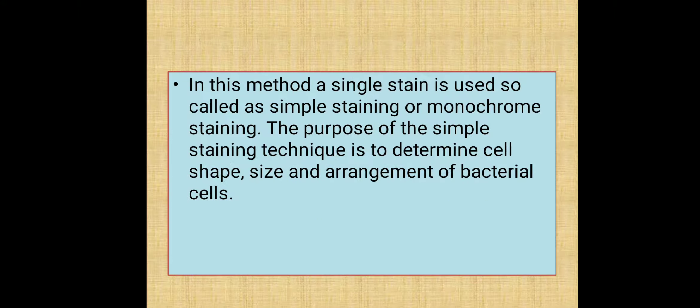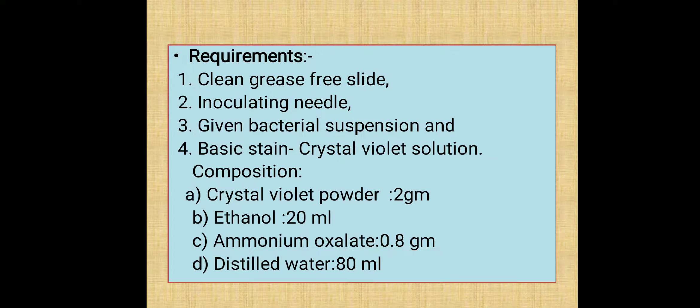In this method, a single stain is used, so it is called simple staining or monochrome staining. The purpose of the simple staining technique is to determine cell shape, size, and arrangement of bacterial cells.